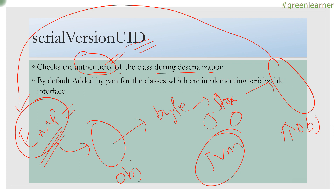The authenticity of the class is performed by the JVM using the Serial Version UID. How does it come into picture? When you are implementing the Serializable interface, it is adding the Serial Version UID in that class automatically when it is being compiled into a dot class file. Serializable is a marker interface and it signals the JVM to do something specific — adding the Serial Version UID is part of that.